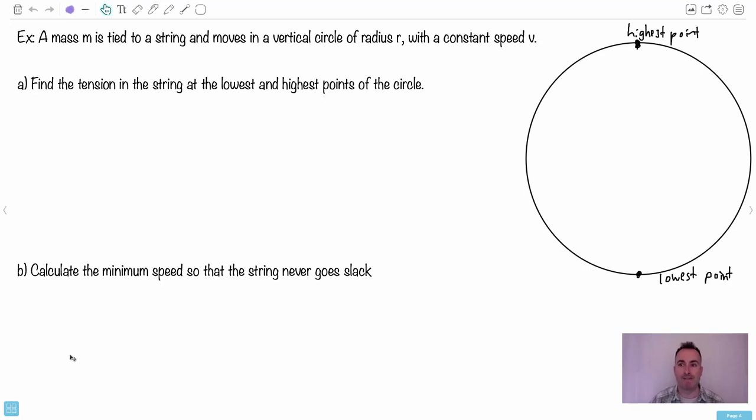I'd like to show you an example with that vertical circle because those are ones that cause a lot of people problems. So here we have a mass m and it's tied to a string. Can you imagine that? There's an invisible string here you're sort of moving it around, and the string goes in a vertical circle of radius r with a constant speed v.